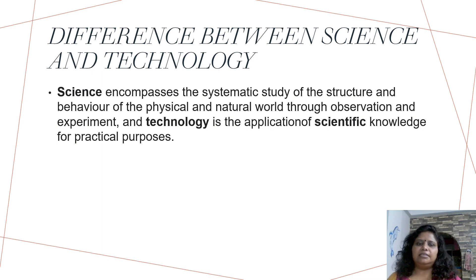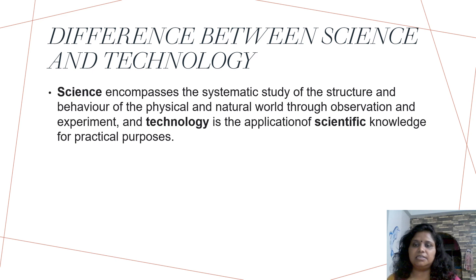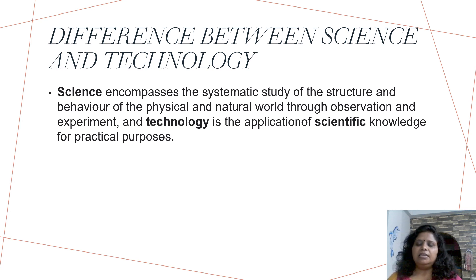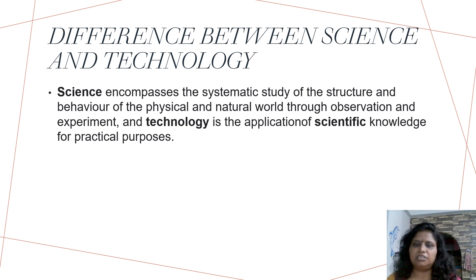Difference between science and technology. Science and technology have differences. Science encompasses systematic studies — it is a systematic study that is structured, behavioral, and involves physical and natural observations. Technology is the application of science. If we understand science as theory, then technology is its application.